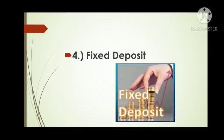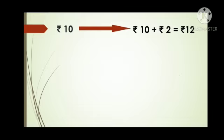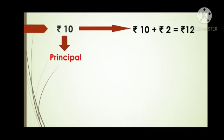Now that we have learned about different kinds of accounts, let us understand what the words interest and rate of interest mean. Suppose one of my friends wants to borrow 10 rupees from me and she will give it back after one year. I tell her she can take the 10 rupees, but after one year she will have to return an extra 2 rupees — that is, 10 plus 2 equals 12. She returns 2 rupees extra because I allowed her to keep my 10 rupees for one year. The original amount she borrowed — 10 rupees — is known as the principal. The 2 rupees she pays extra after one year is known as the interest.